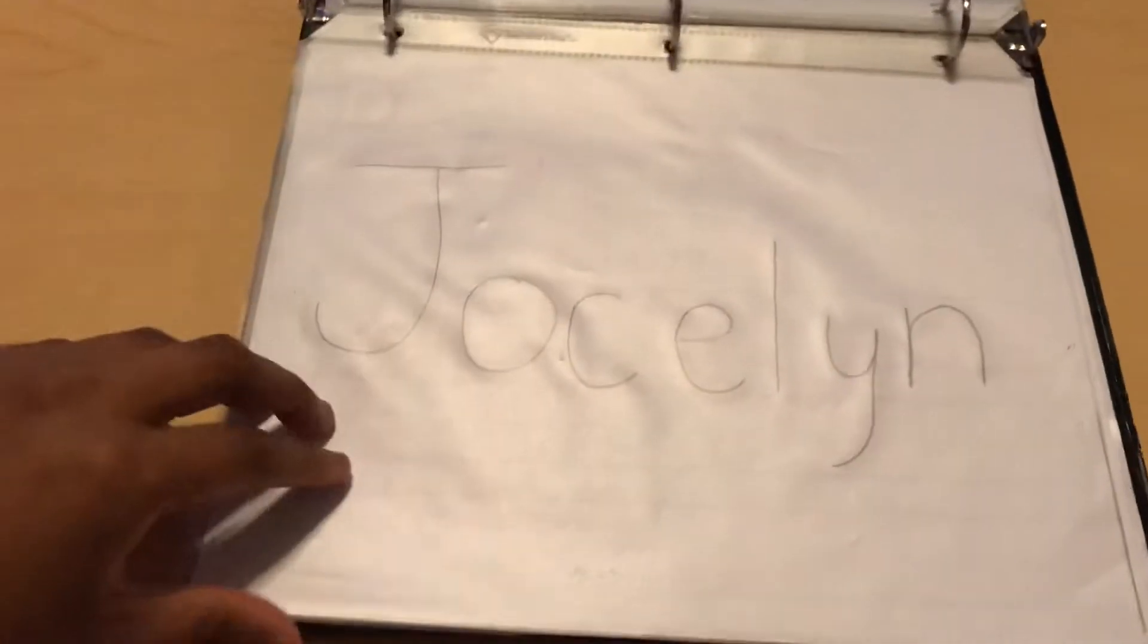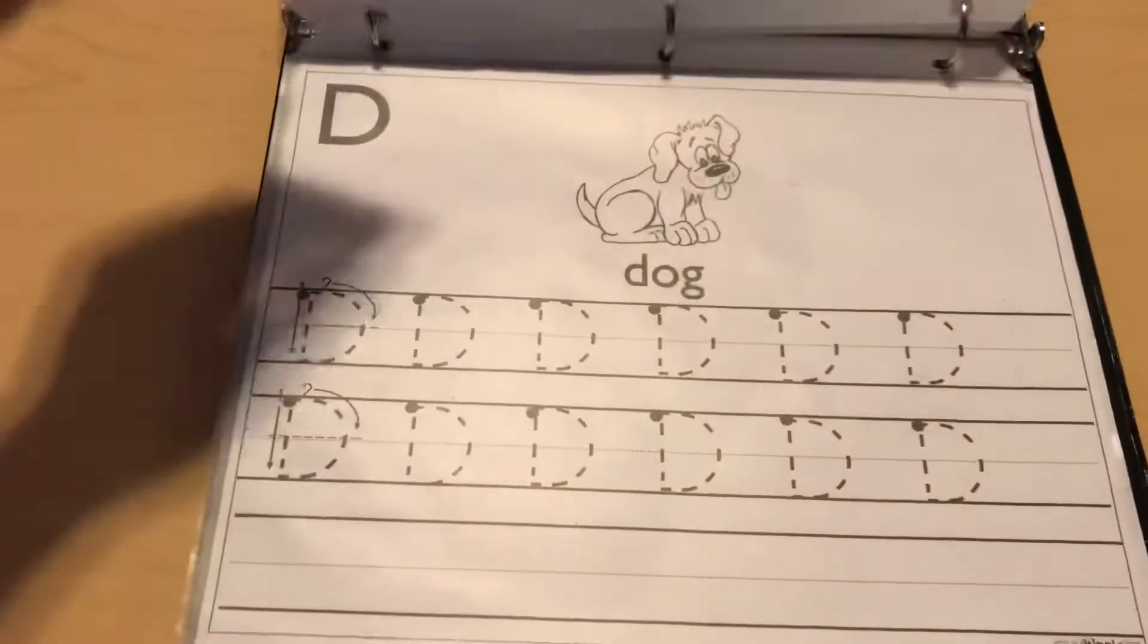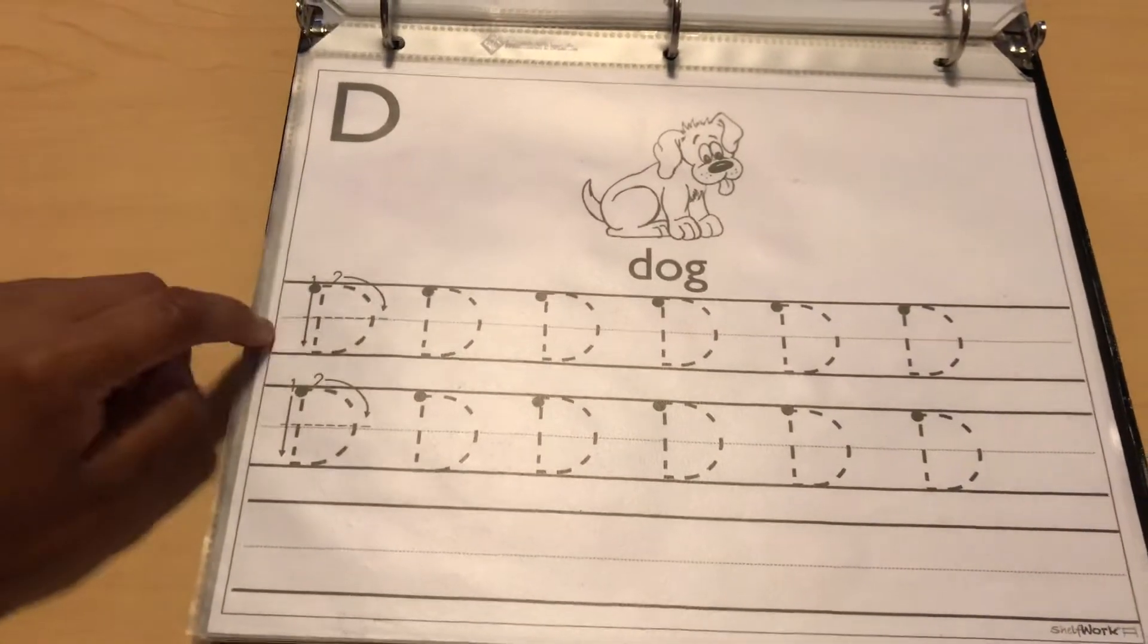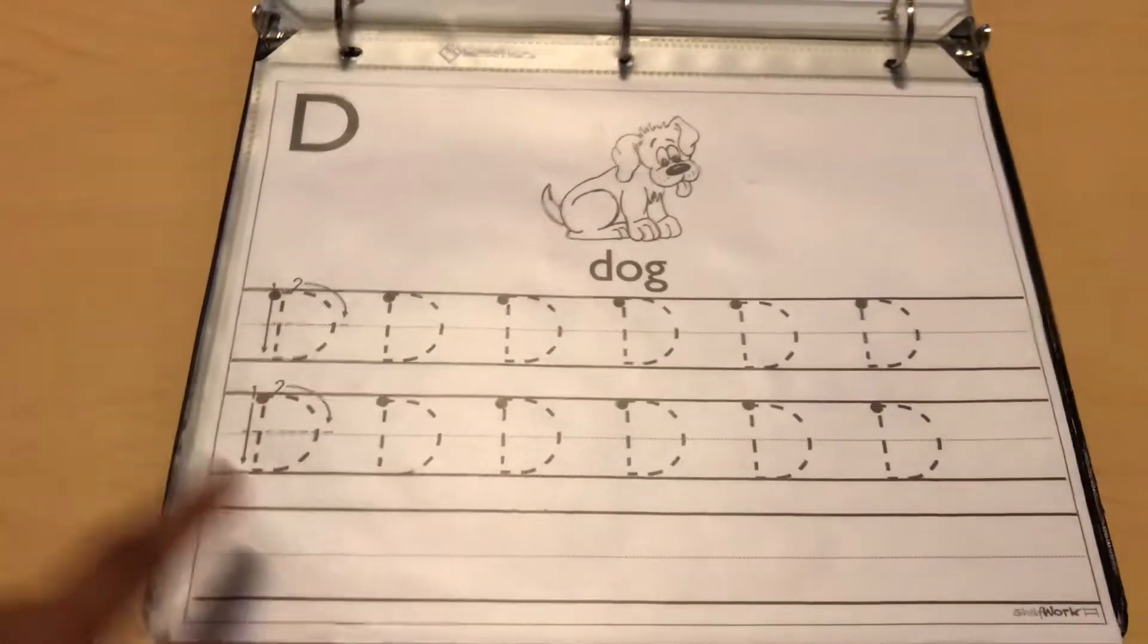This is her name, so she's tracing her name. The letter of the week for this week is D, so she'll trace and then write by herself. This is the numbers, tracing numbers one through six, and that is that.